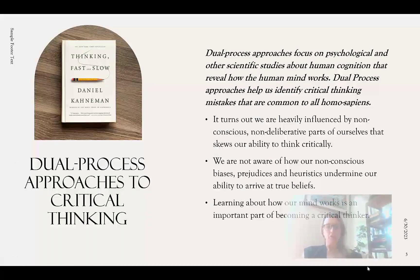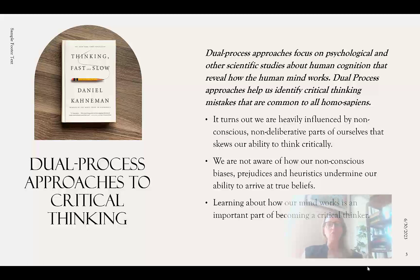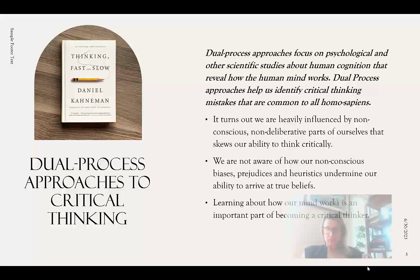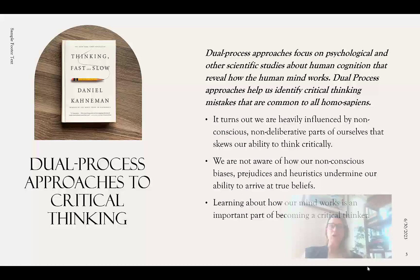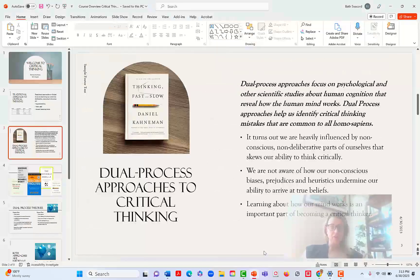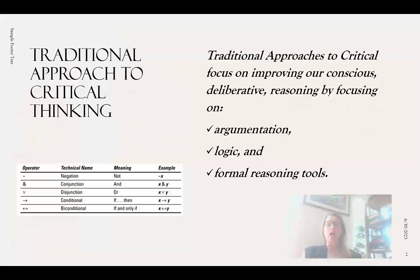Dual process approaches to critical thinking focus on research from psychology and other scientific studies about how the human mind actually works. Dual process theories help us identify critical thinking mistakes that are common to all homo sapiens because of the way that our minds and brains developed in our very long evolutionary past. So the dual approach recognizes that we are heavily influenced by our non-conscious, non-deliberative parts of ourselves, and this skews our ability to think critically. For a long time people thought that we had easy access to this approach to critical thinking.